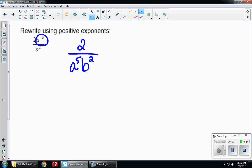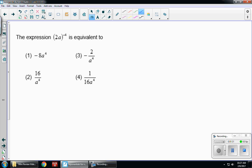Let's look at another one. The expression 2a to the negative 4th is equivalent to, and I have four answer choices. My negative 4 is being given to the whole parentheses, so that means the entire parentheses of 2a is moving to the denominator to make it a positive 4 power.